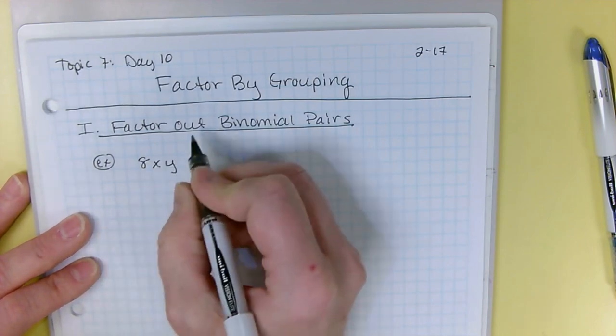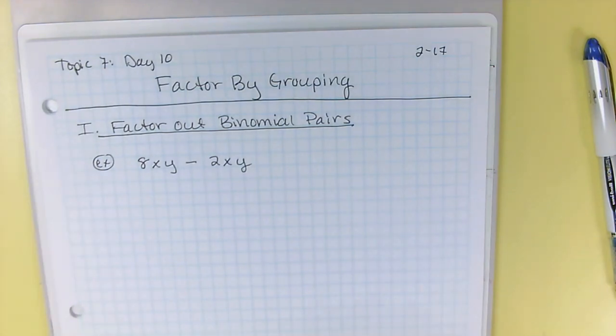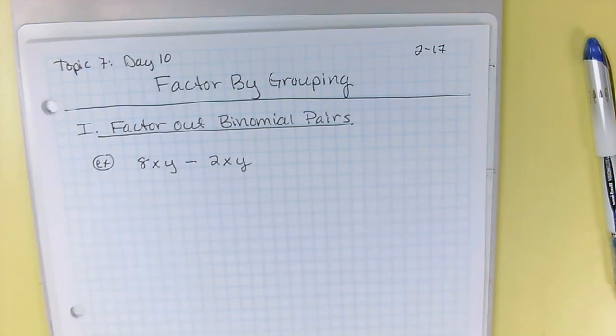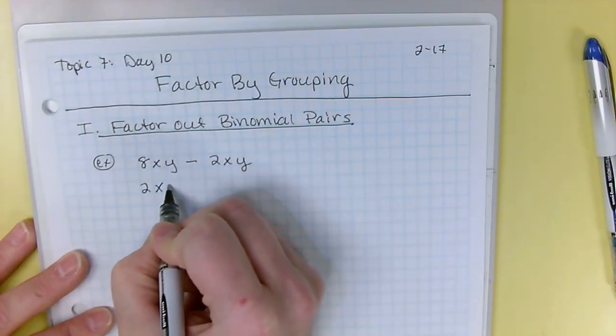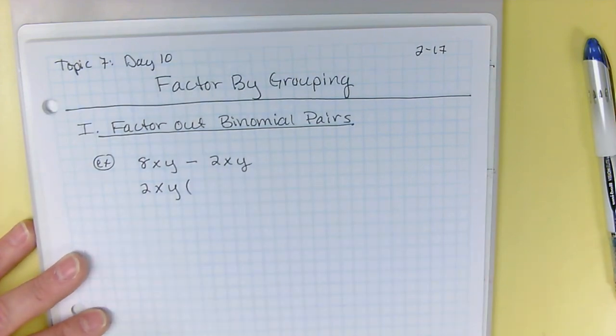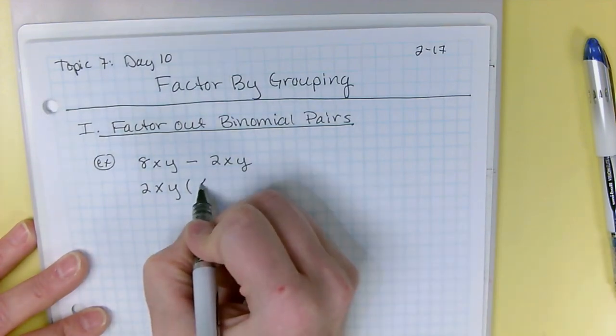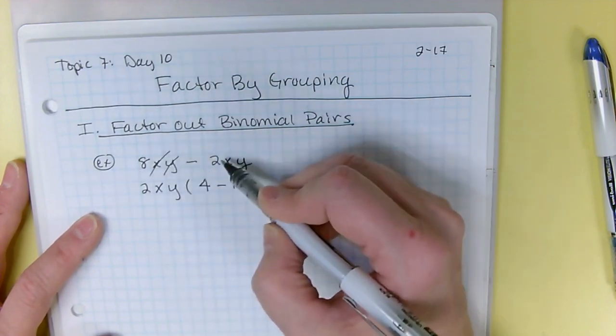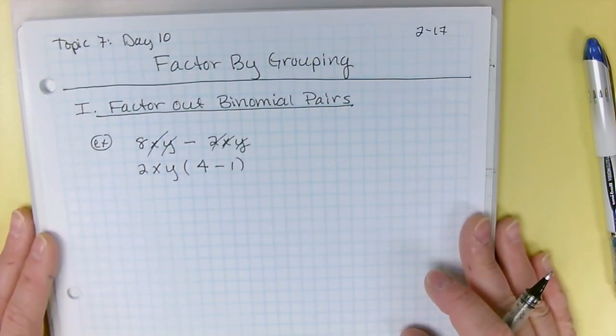Let's say you've got 8xy minus 2xy. So you already know how to do something like this. You would divide out what the two factors have in common, and it would go to the front. So you might take out a 2, you might take out an x, you might take out a y. It would go to the front, and you would be left with 4 minus 1. Because you take the 2 out of the 8, the x and the y would cancel, and you would just simply divide it to the front.